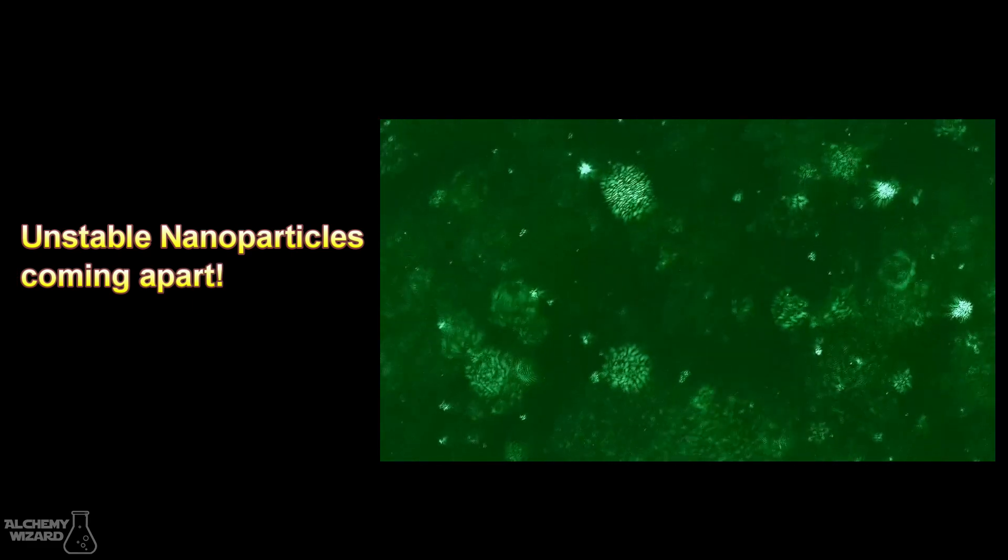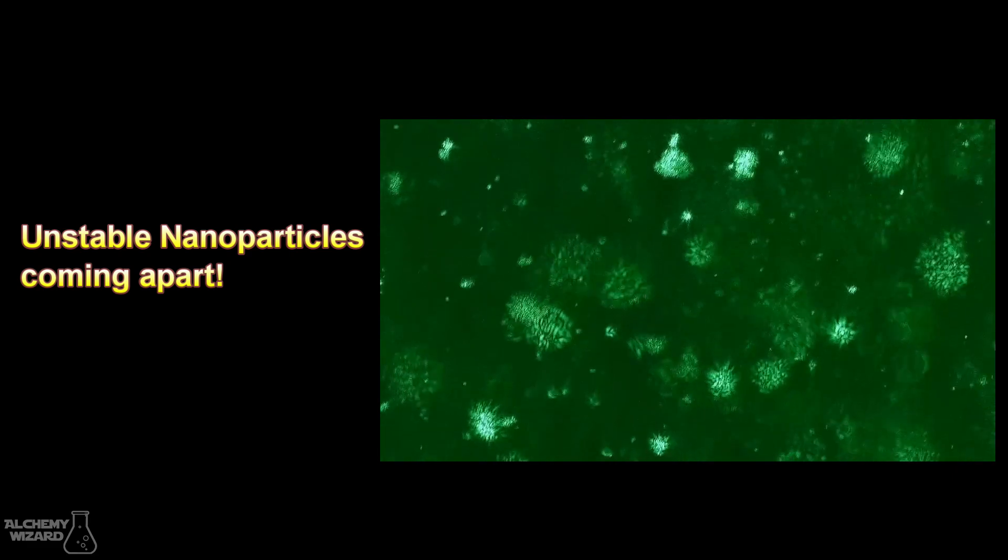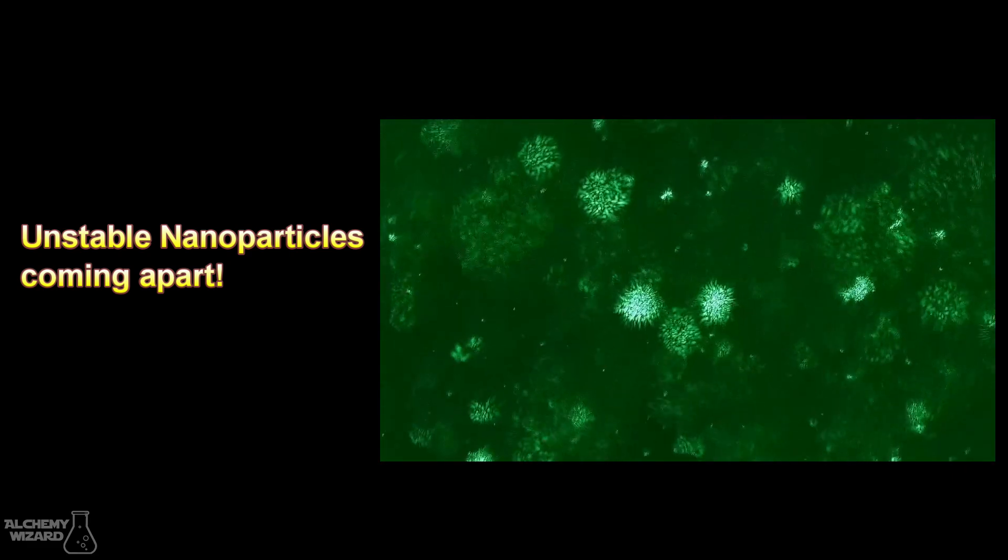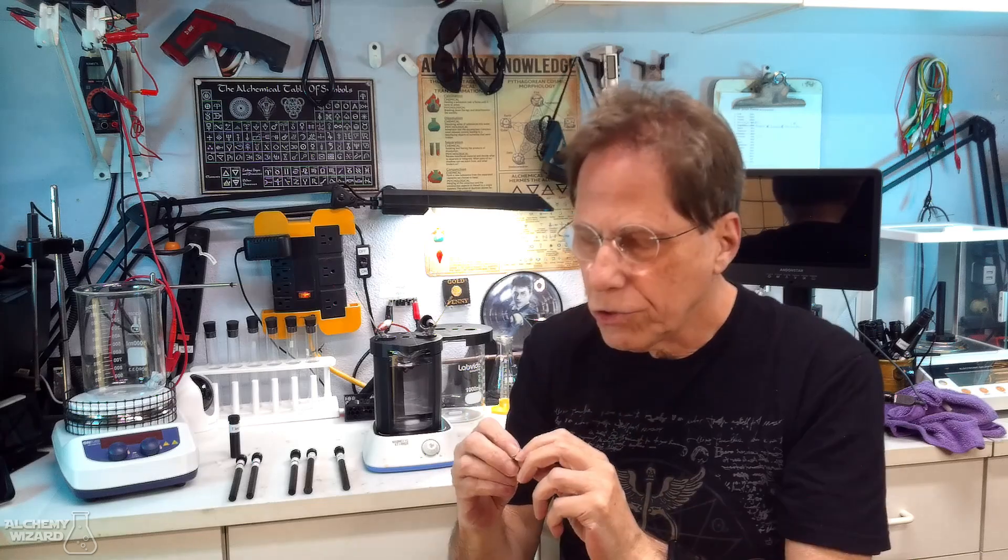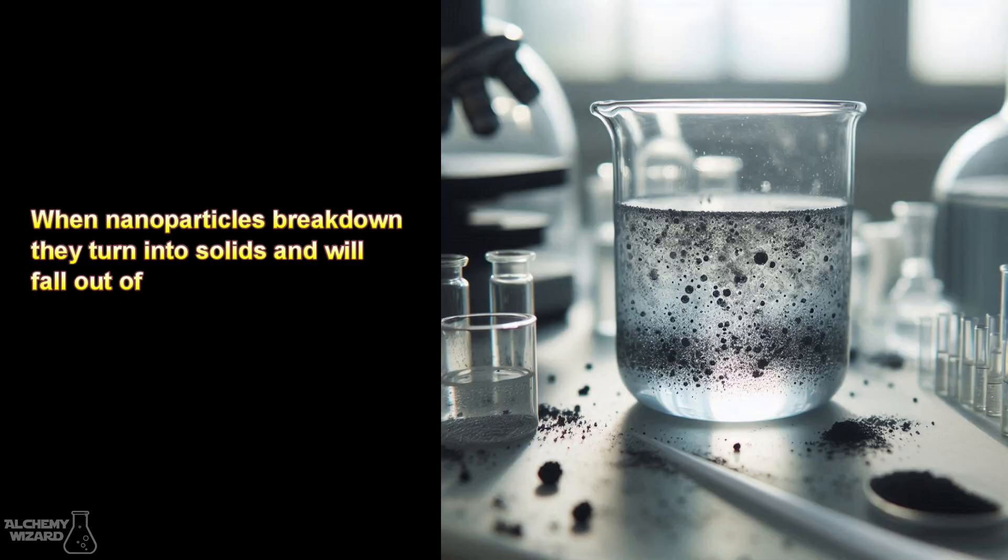Basically, I'll get maybe a week or two out of the substance, sometimes only days before it just breaks apart and I'll have flakes falling down into the bottom. You make Electrum with low voltage electrolysis using 14 karat gold, it seems fairly stable. I have some stuff here for years that's still actually good, but for some reason plasma arc breaks down.